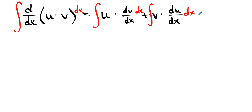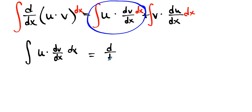What if we were to integrate across the board? And then, better yet, let's make this the focus of the discussion. Let's make this all by itself: the integral of u times dv/dx dx is equal to—kick that over—the integral of the derivative of u times v dx minus the integral of v times du/dx dx.